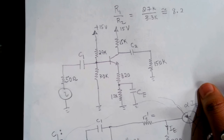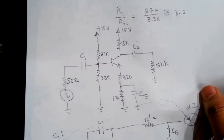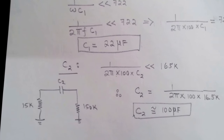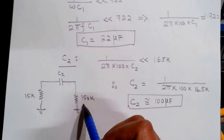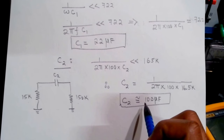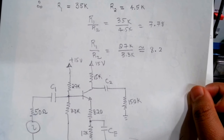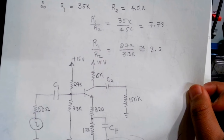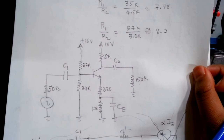For C2, looking at the series combination of the 15kΩ collector resistor and the 150kΩ load, similar calculations give C2 ≥ 100 nF — anything above that ensures C2 looks like a short at 100 Hz, coupling the amplified signal to the load without attenuation. For CE, the Thevenin resistance looking into the emitter node is approximately 2.1kΩ. CE should be much greater than 1/(2π × 100 × 2.1k), which gives CE ≈ 10 µF, guaranteeing the 1.2kΩ resistor is bypassed for signals above 100 Hz.